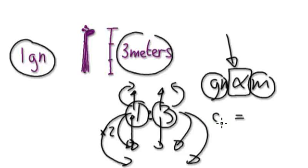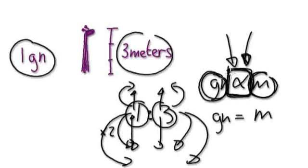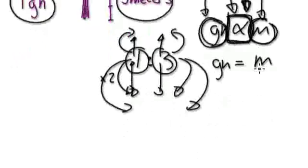We can't use 'equal' because we can't say one giraffe neck equals one meter. We have to say that this is directly proportional to this. Direct proportionality is just a way for us to express how one thing is related to another thing.